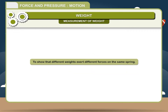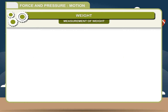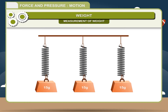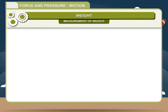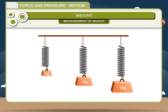Activity: To show that different weights exert different forces on the same spring. Take three springs of the same stiffness — all three will show the same extension when the same force is applied. Suspend different weights, for example 5 grams, 10 grams, and 15 grams on the springs. You will notice that all the springs show different extensions, demonstrating that different weights exert different forces on the same spring.